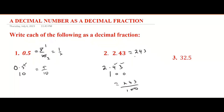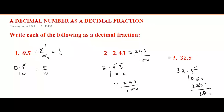For 32.5: put one underneath the decimal point, one digit after the decimal so add one zero, giving 325/10. To simplify by dividing by 5: five goes into 325 — that is 65 times — and five goes into 10 two times. So 32.5 = 65/2.